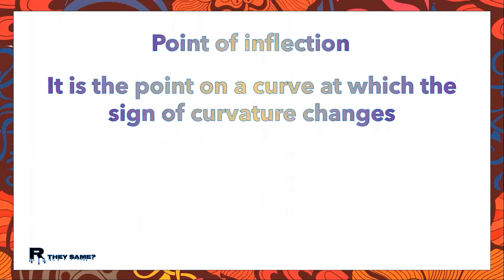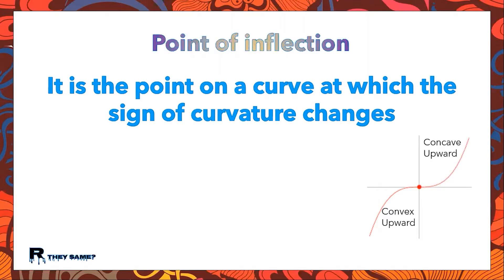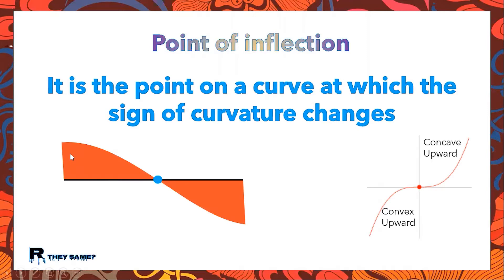First of all, what is the point of inflection? It is the point on a curve at which the sign of the curvature changes. In this figure, the curve is convex upward up to the red dot. If the curve continues concave upward from that point, then the red dot is called a point of inflection. In a bending moment diagram like this, the left part is positive, gradually decreases, becomes zero, and then changes curvature to the negative direction — this point is called the point of inflection.